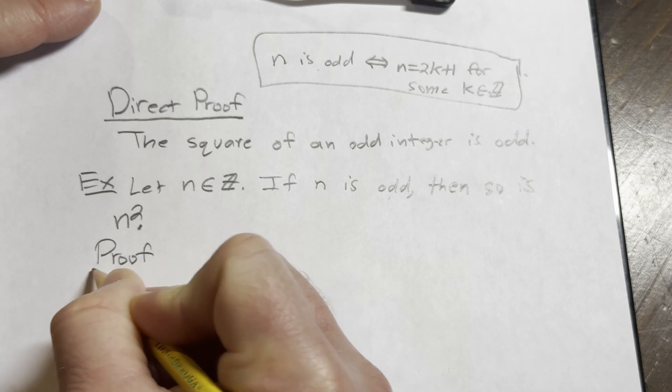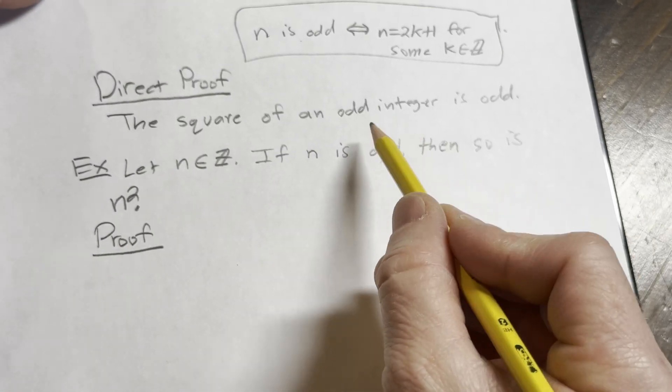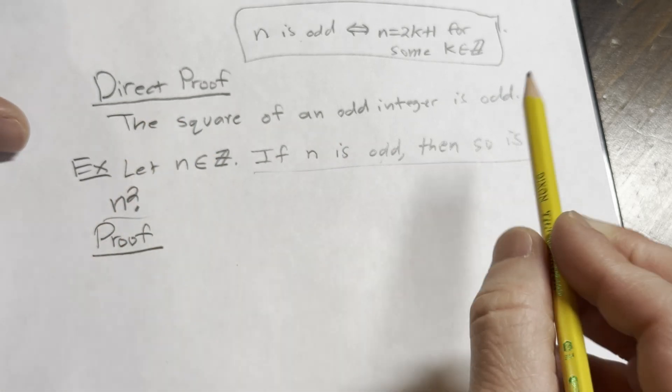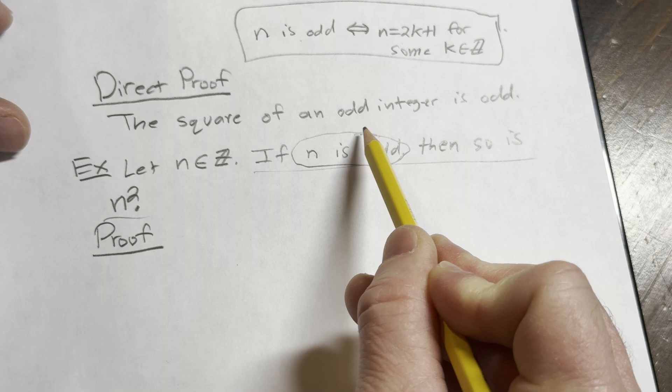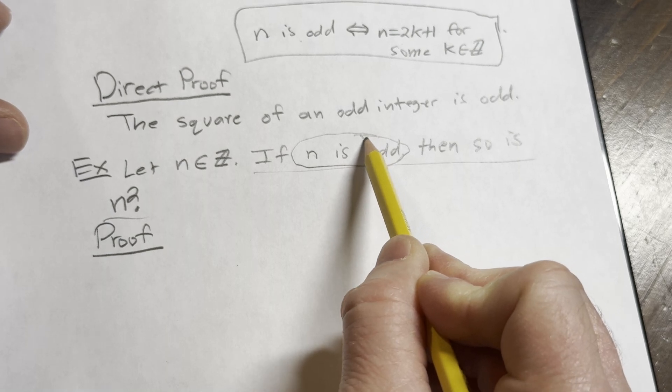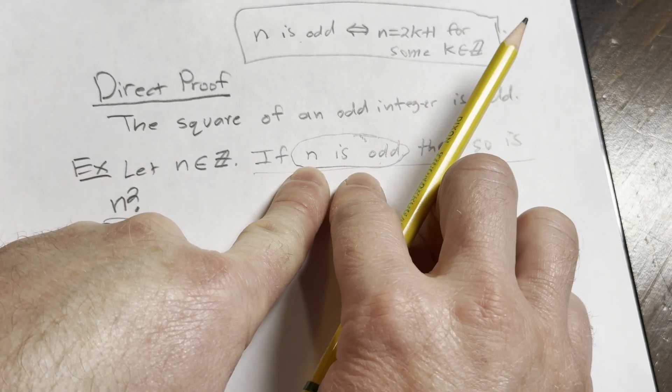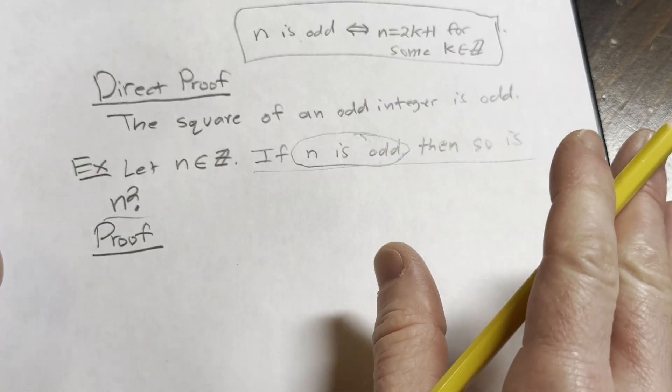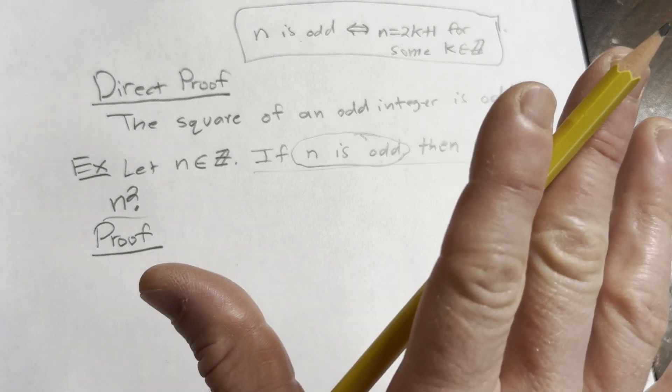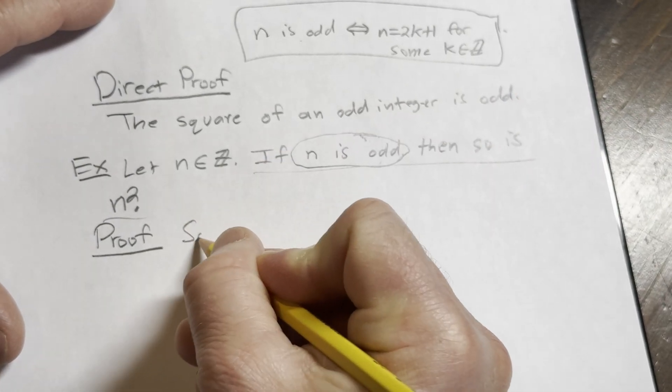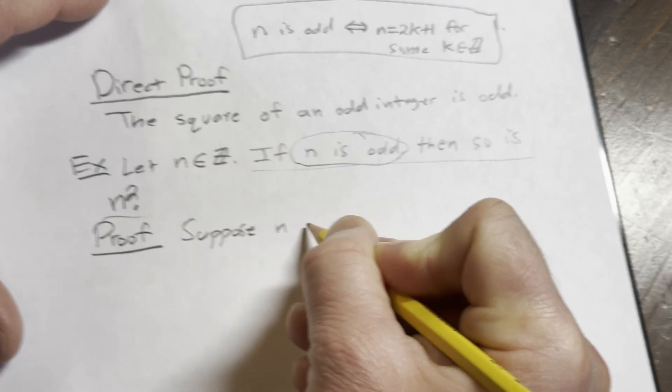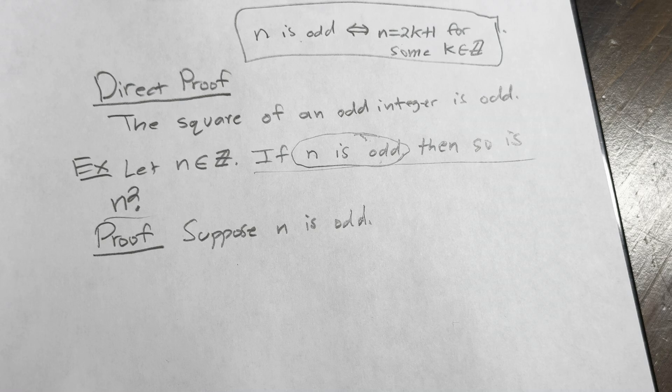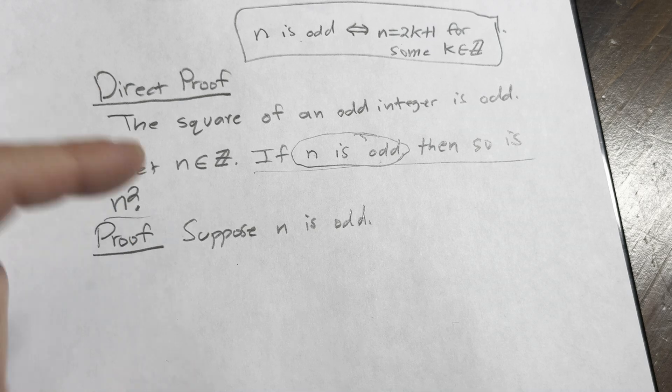Proof. So to prove this statement, this is a direct proof. So we assume this is true. We start by assuming this piece is true, always in a direct proof. Everything after the if but before the then. So if it's after the if, this is what you assume. So we'll say assume, you can use the word assume, I'm going to use the word suppose. Suppose n is odd.